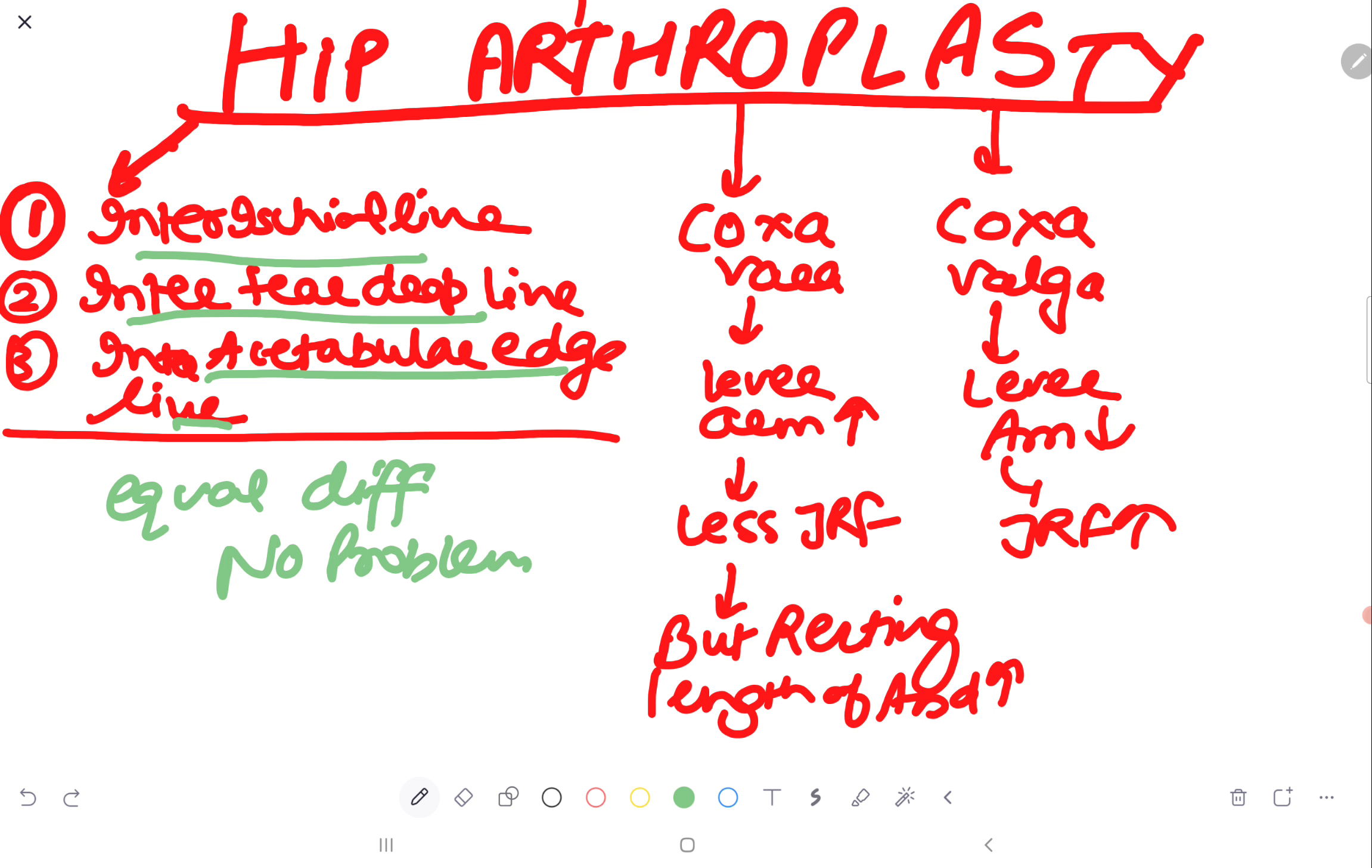Likewise, you will see the difference between inter-teardrop line and inter-ischial line at right or left side. If it is equal, then it means there is no problem at the femoral side.